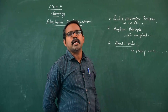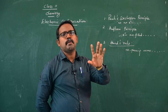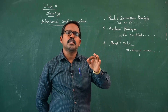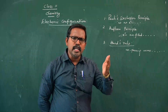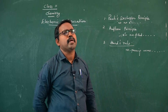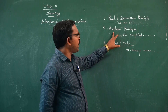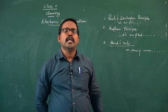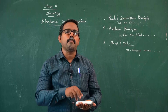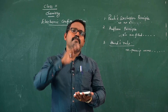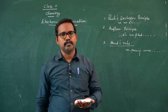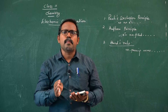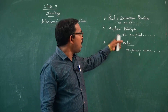No two electrons in an atom can have all four sets of quantum numbers identical. Suppose an electron in an atom has three quantum numbers with the same values, but it entirely differs in the fourth. Any one of the quantum numbers may differ. The second rule is the Aufbau principle: electrons are filled in the increasing order of energy. In the ground state, electrons are filled in the increasing order of energies. That is the Aufbau principle.